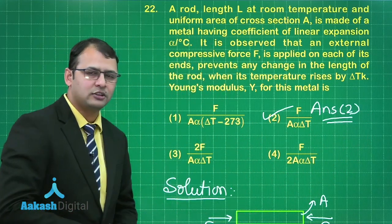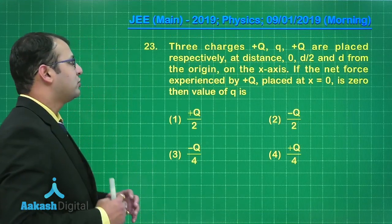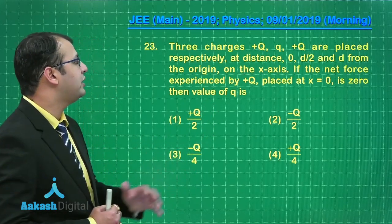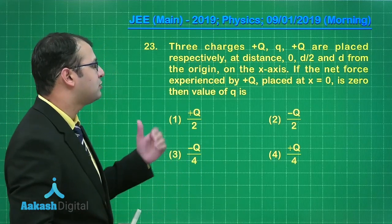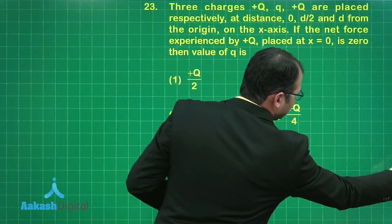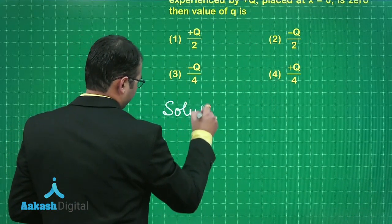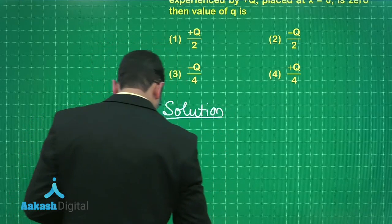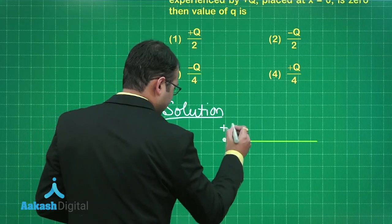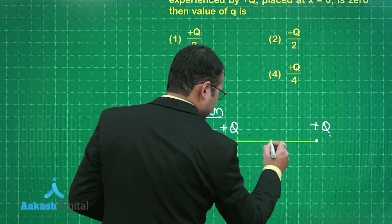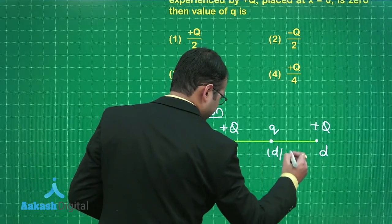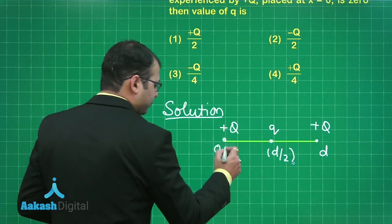Let's move ahead and see our next question. In this question number 23, there are three charges +Q, small q, and +Q placed respectively at distance of 0, d/2, and d from the origin on x-axis. If the net force experienced by +Q placed at x equals 0 is zero, then the value of q is. Before going to solution, let's see the diagram of this case. Let's suppose there's a line and there's a charge +Q here and there's a charge +Q here, and there's a charge exactly in the middle small q. This is 0, this is d, and this is d/2.